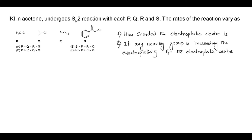One is how crowded the electrophilic center is, and if there is any nearby group which is actually increasing the electrophilicity of the electrophilic center. Now we will check all these four compounds one by one. First, we have compound P, which is methyl chloride. That means it is very less crowded — it has three hydrogens and a chlorine. The chlorine will be the leaving group and iodide will be the attacking nucleophile.